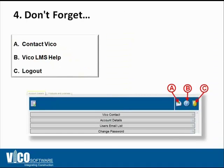Just one more important thing to note: in the customer portal in the top right hand corner there are three icons. To the left you can contact VICO. To the right you would log out of the system anytime you're done managing your licenses. And in the middle, the question mark is a help menu that has a pretty descriptive explanation on how to use the customer portal. I'm going to go ahead and jump into the VICO customer portal and show you how to use it.